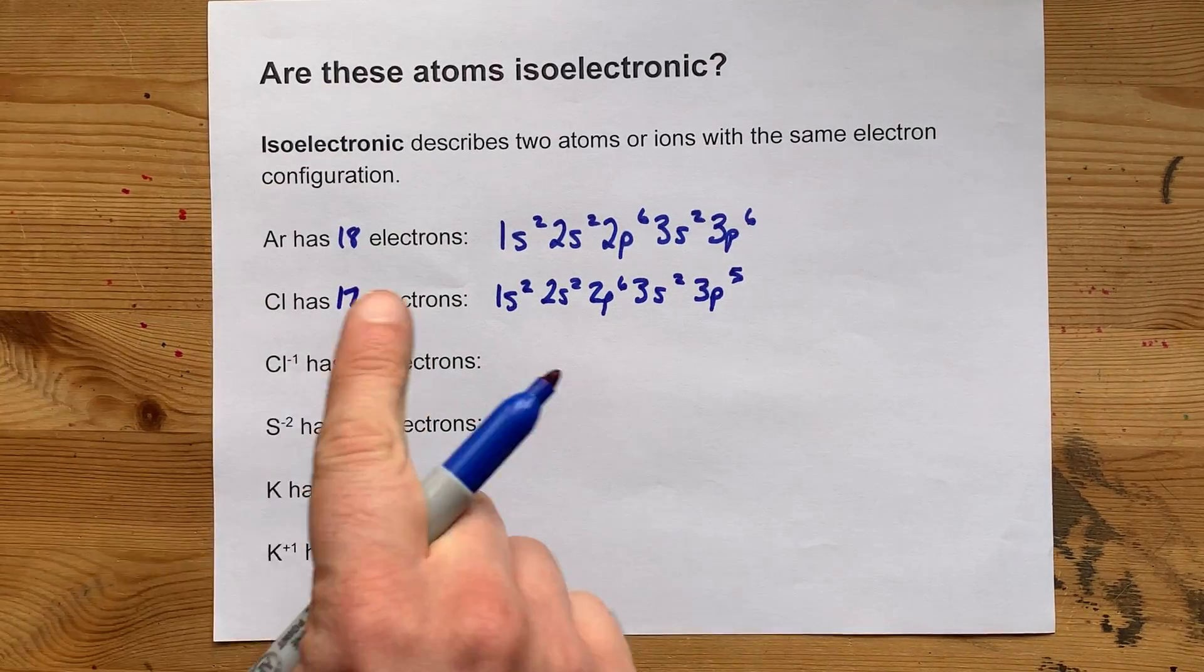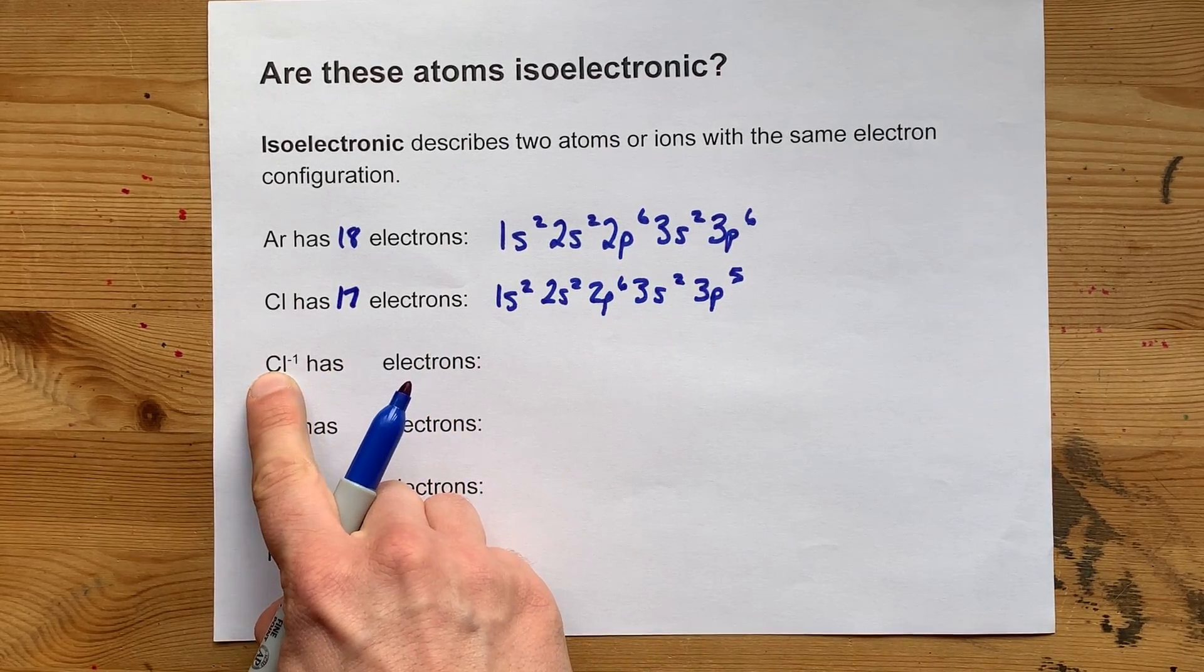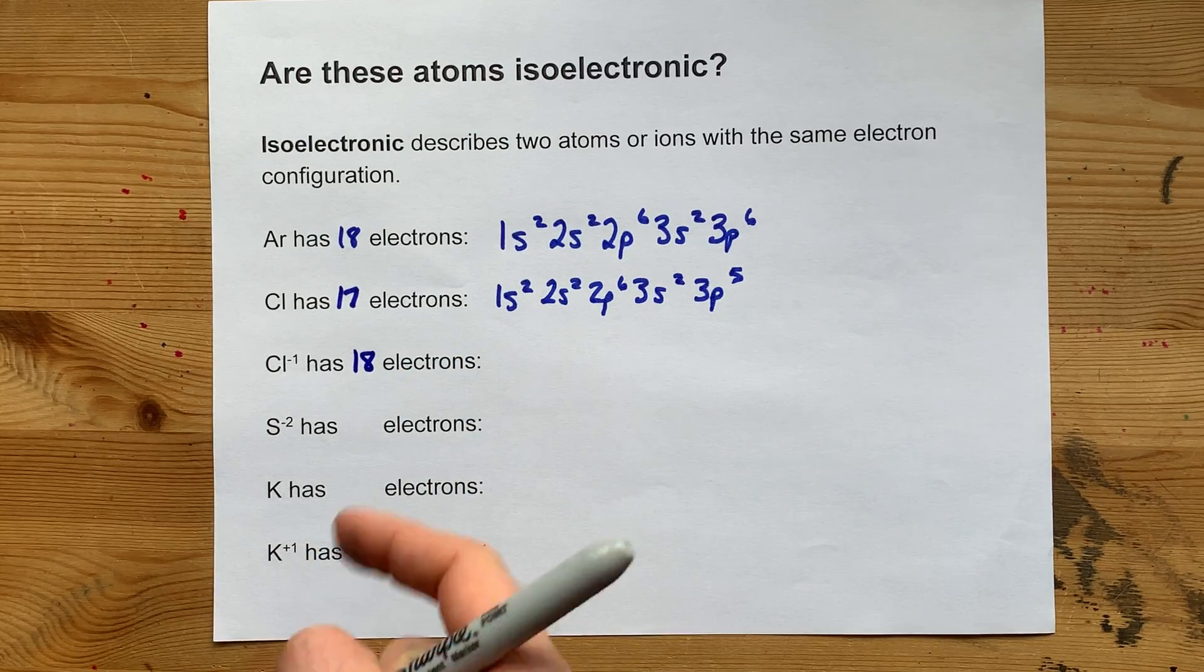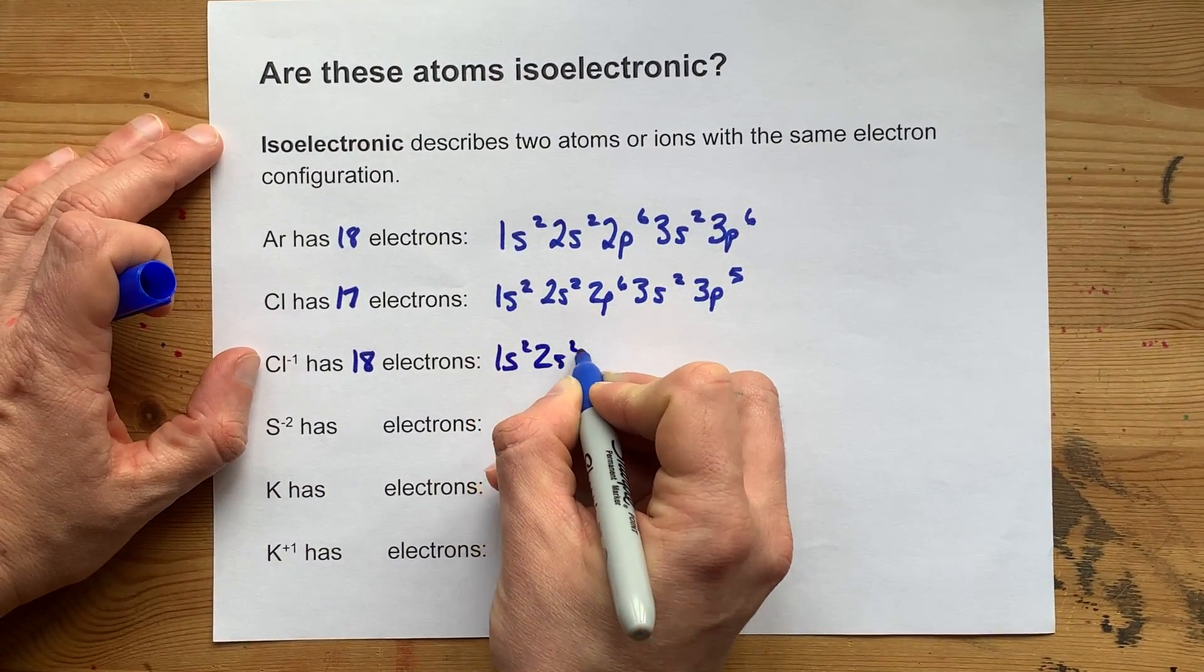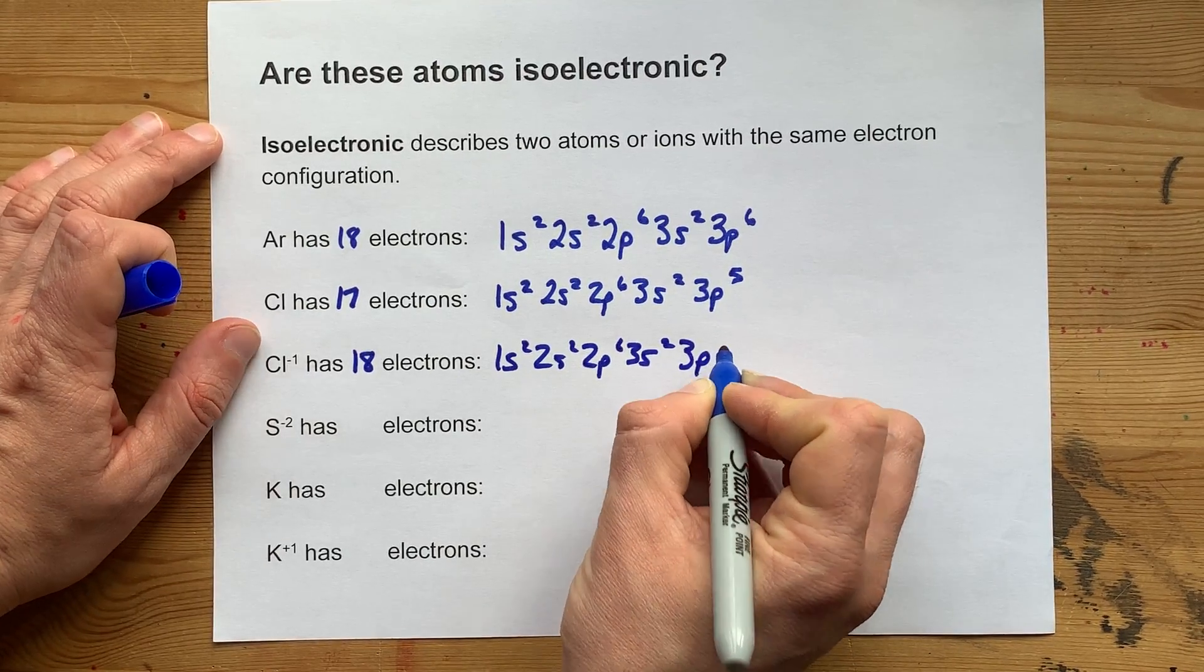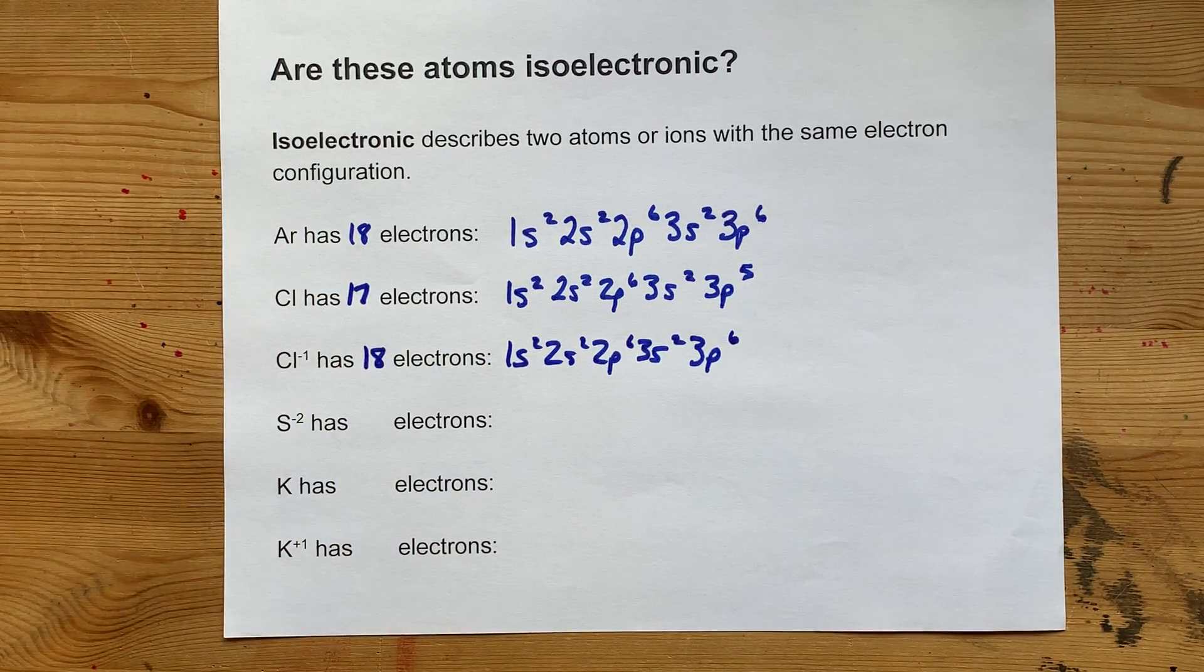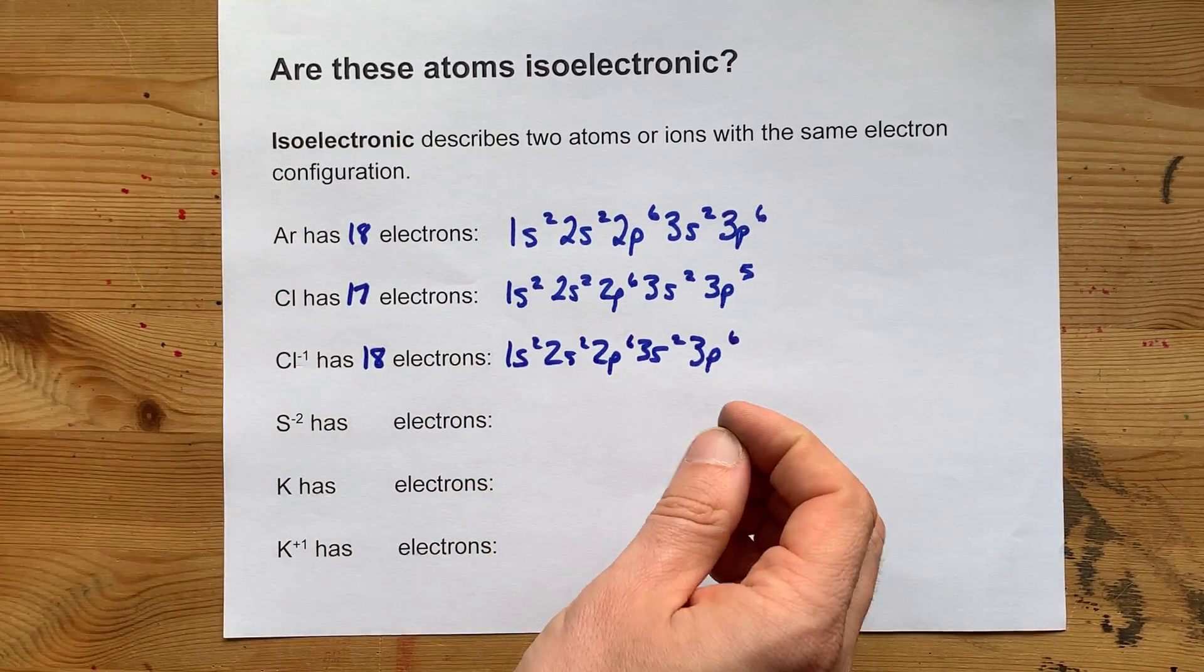Now, Cl-, the chloride ion, is chlorine with 17 electrons plus a bonus electron for the -1 charge. It has 18 electrons. So you add one more electron to what was chlorine: 1s2, 2s2, 2p6, 3s2, 3p5, plus one extra gives you 3p6. Same electron configuration because they have the same number of electrons. Cl- and Ar are isoelectronic with each other.